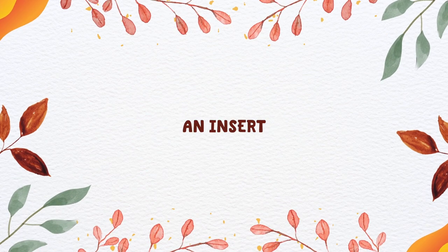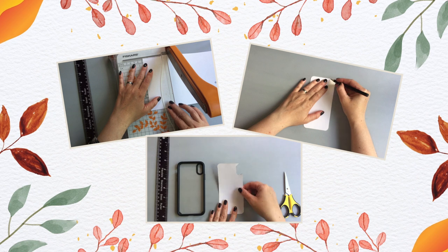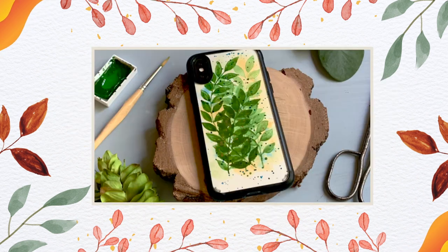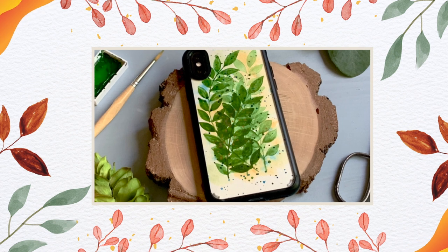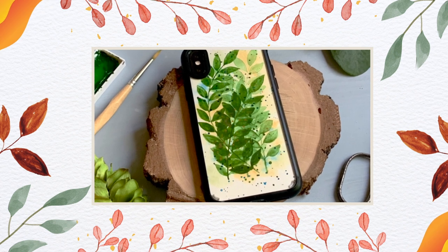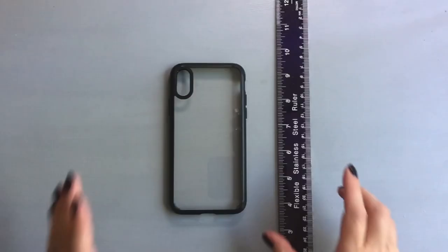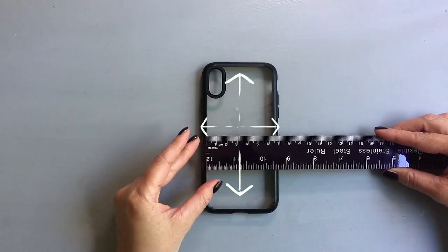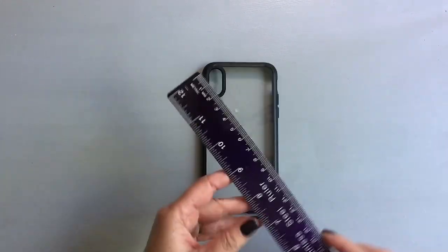Would you like to create an insert for your clear mobile phone case? In this video, I will show you how to create a template, and I will also show you how I created this insert from start to finish. The first step for both methods is to measure the case — the length and the width. My case is 14 centimeters long and 6.7 centimeters wide.